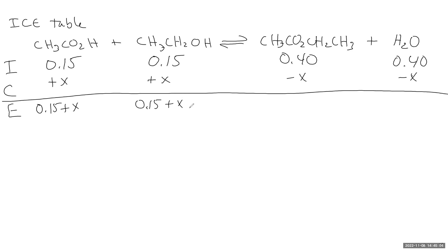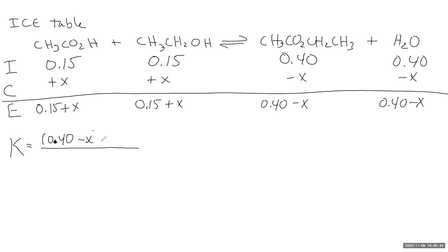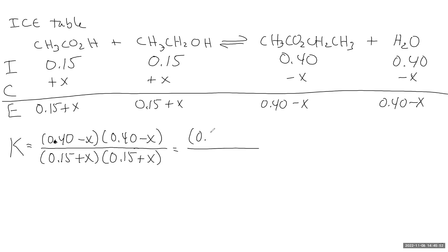Now we write the equilibrium constant expression, which we'll solve to find X. It's products over reactants, so we put in (0.40 − x)(0.40 − x) on top and (0.15 + x)(1.5 + x) on the bottom. Since the numerator is the same factor squared, we can simplify it as (0.40 − x)² over (0.15 + x)², and set that equal to K = 4.0.